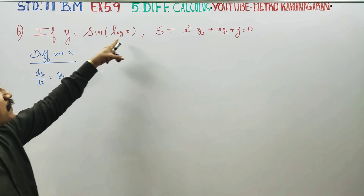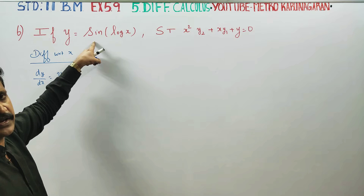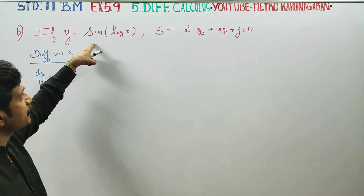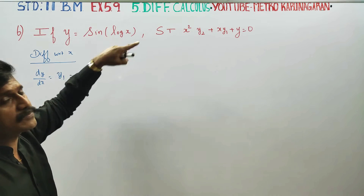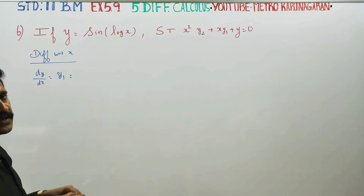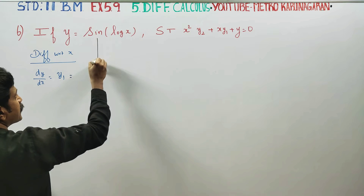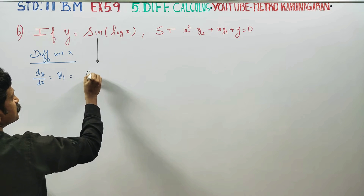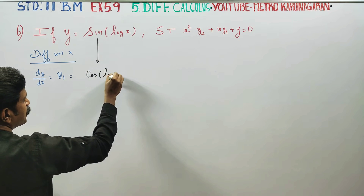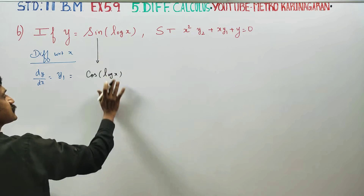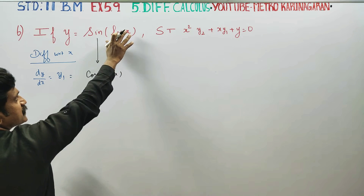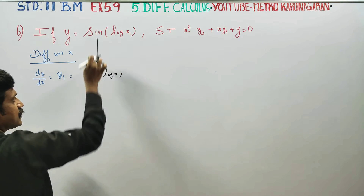See this function. Using the chain rule, the derivative of sin(log x) gives cos(log x). So the result involves cos(log x), since the derivative of sin is cos.